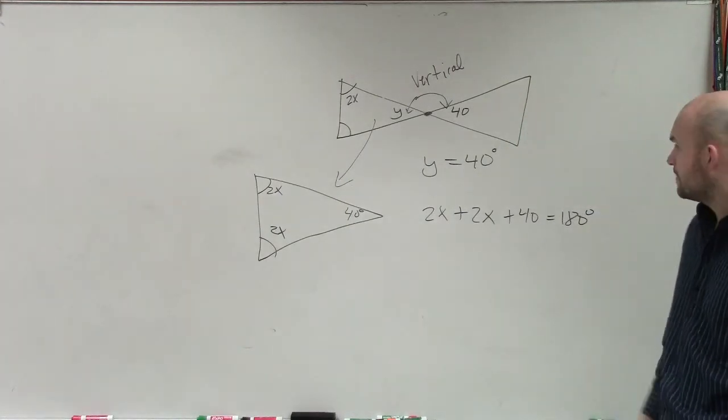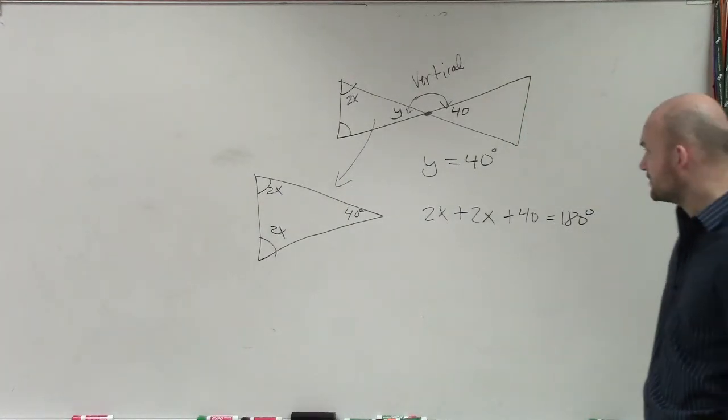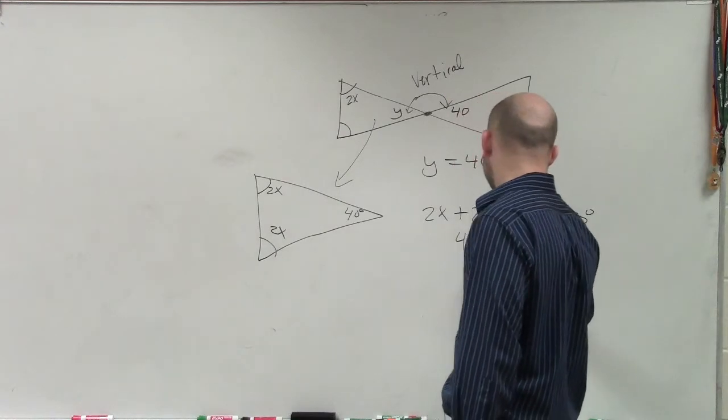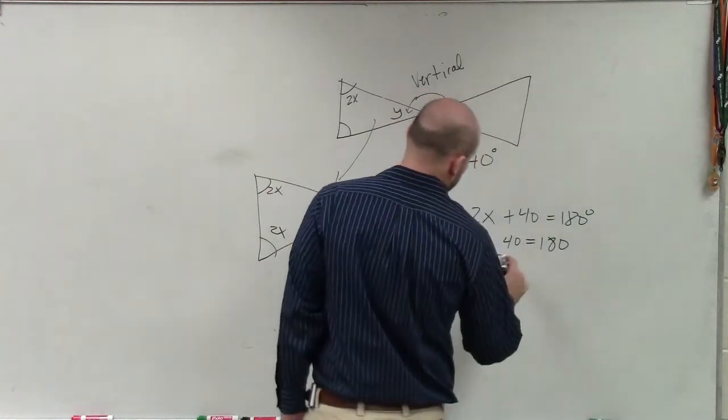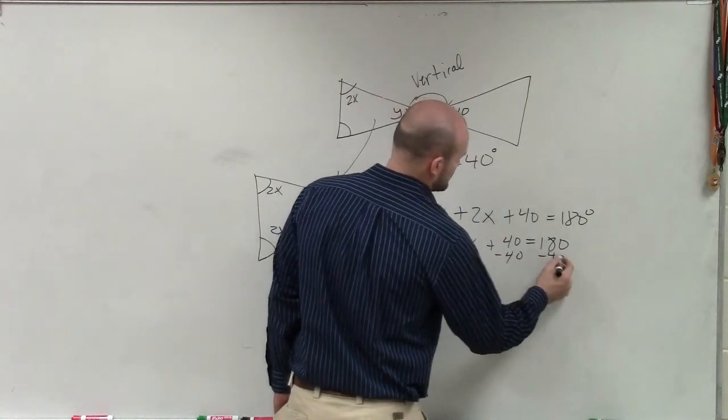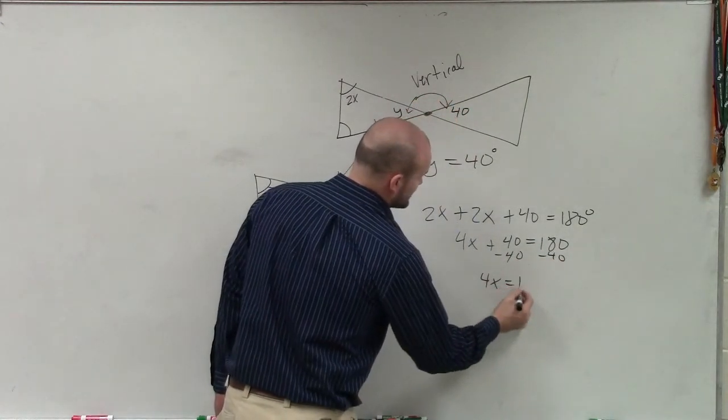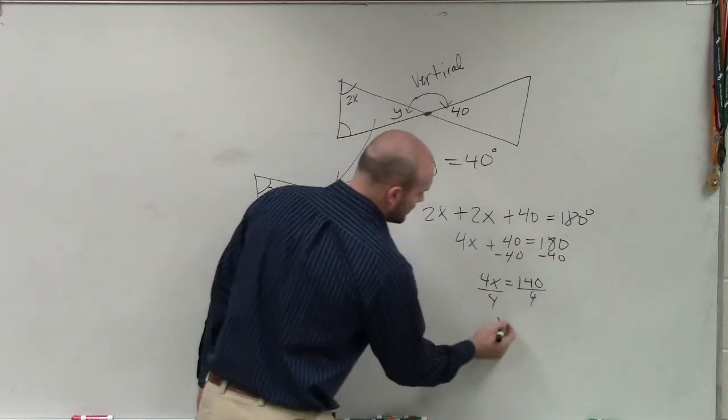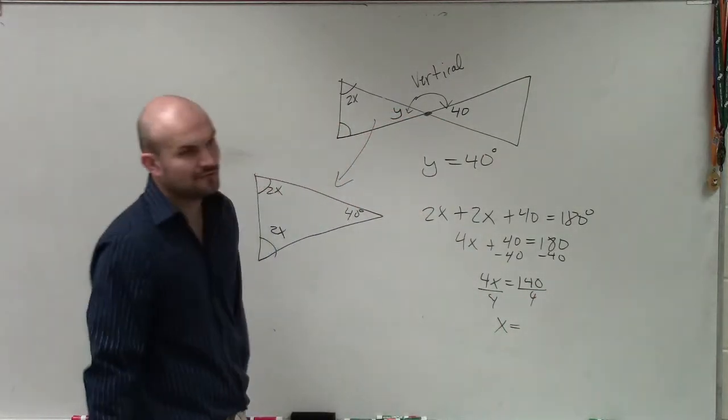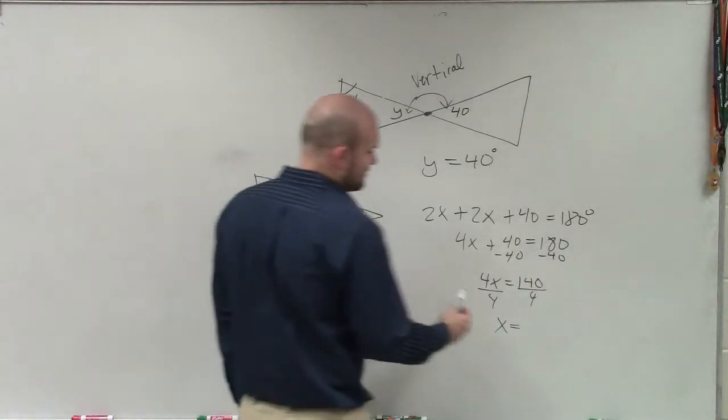You don't have to write the equation. I'm just trying to show you mathematically what would make sense. 2x plus 2x plus 40 equals 180. Subtract 40. Subtract 40. 4x equals 140. Divide by 4. Divide by 4. x equals 140 divided by 2 is 70. Divided by 2 again, it would be 35.